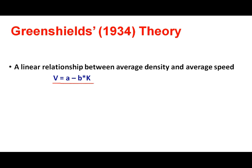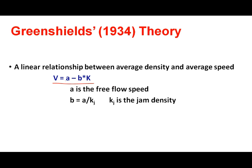Here V is speed at any density. If K is 0, this speed will be the free flow speed, so the constant A will be the free flow speed. B will be equal to A divided by K_J, where K_J is the jam density.